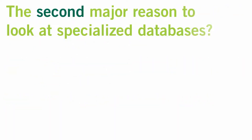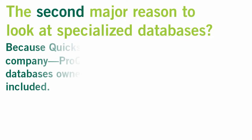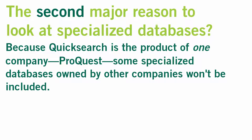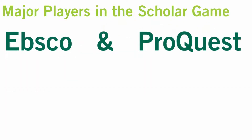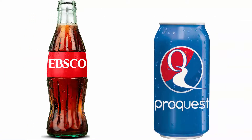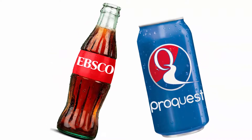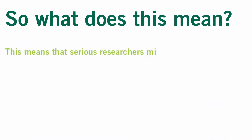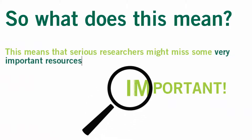The second major reason to look at specialized databases: because QuickSearch is the product of a specific company, ProQuest, some important specialized databases created by other companies are not indexed in it. You may be familiar with the two really big scholarly database companies, Ebsco and ProQuest. Ebsco might be the giant Coke product of article databases, but ProQuest is like Pepsi — equally large with many other products to offer. This means that serious researchers might miss some very important resources if they were only to use QuickSearch.